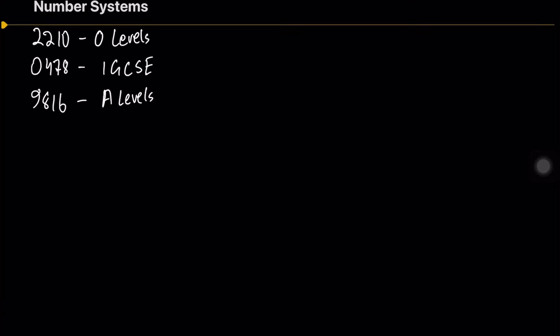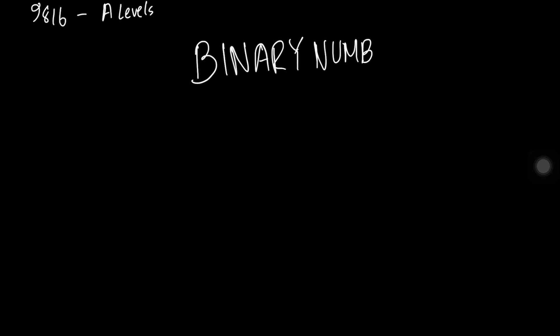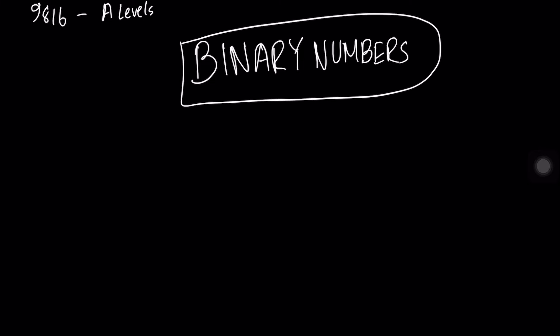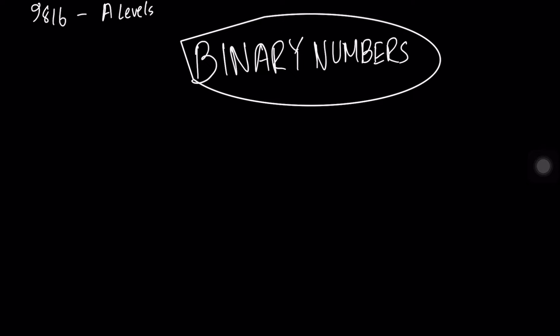We need to first understand how computers represent data and numbers. In general, computers cannot understand numbers or data the same way humans do — they understand data very differently. Computers have one main way of understanding data, which most of you should already know: that is the binary number system.